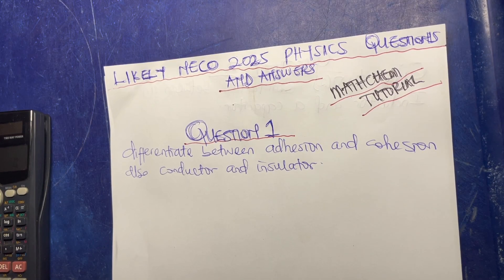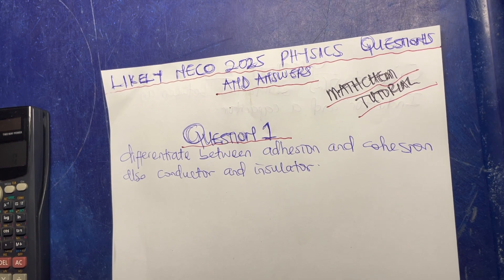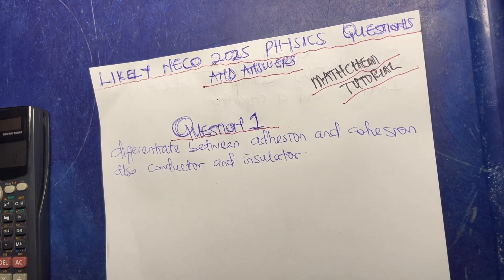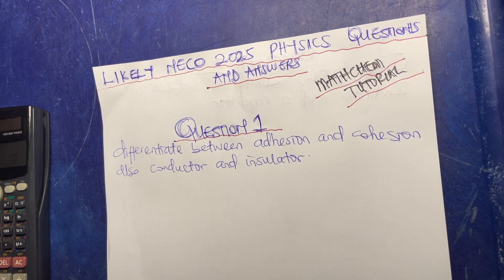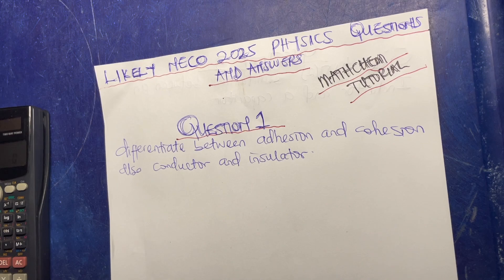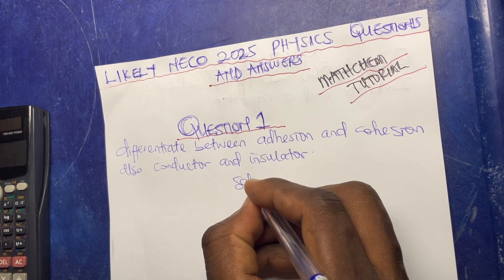In this video we're looking into likely network 25 physics questions and answers that you should add to whatever you are reading. Question one says that you should differentiate between adhesion and cohesion, and also between a conductor and insulator. Let me start the solution from here.